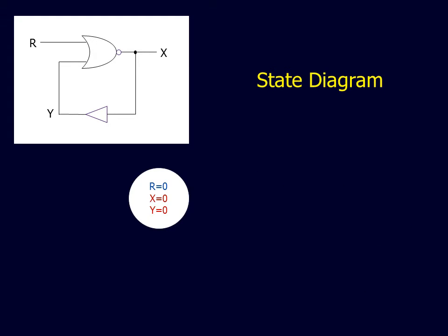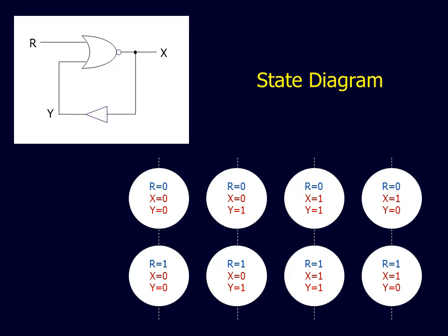A circuit state consists of one possible combination of input and output values. Each state is represented by a circle with the inputs at the top and the outputs at the bottom. In the complete state diagram, we will array all the possible states in a manner similar to the Carnot map. All possible combinations of inputs will be arranged in rows, whereas all possible combinations of outputs will be arrayed in columns.